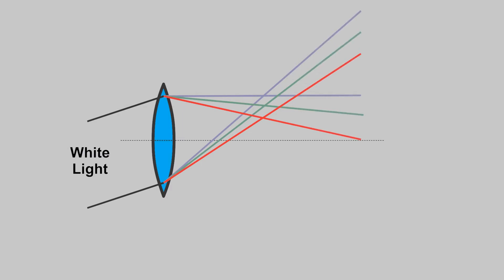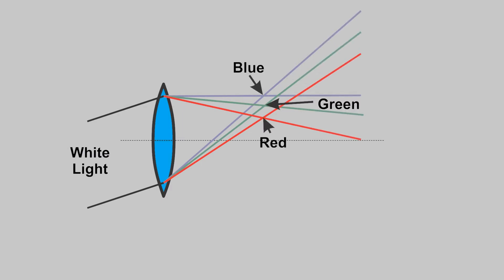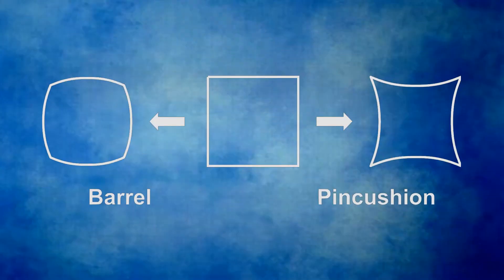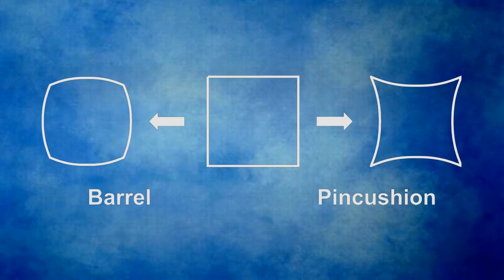At a fixed image distance each color is focused at a different position. This is called lateral chromatic aberration. Any deviation from perfectly constant magnification is called distortion. If the magnification decreases from the center towards the edges it is called barrel distortion. If it increases, it is called pincushion distortion.